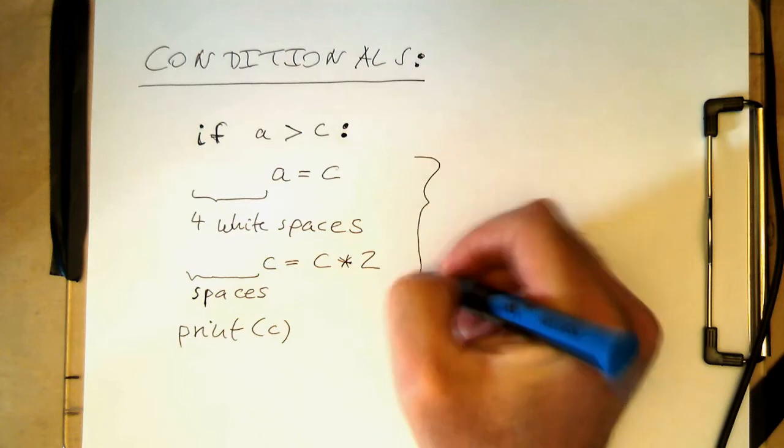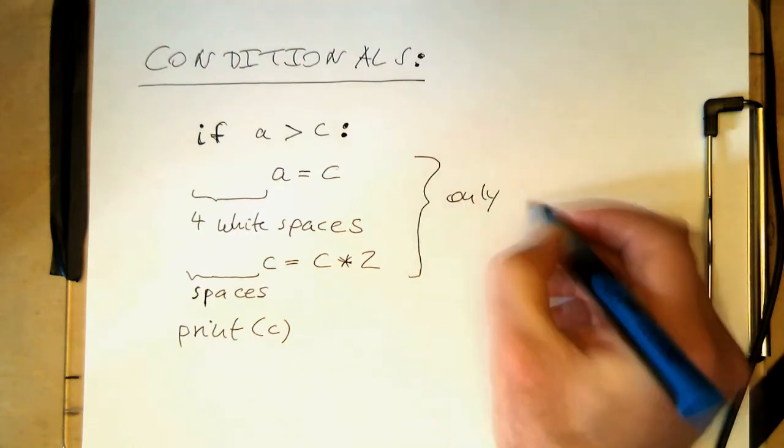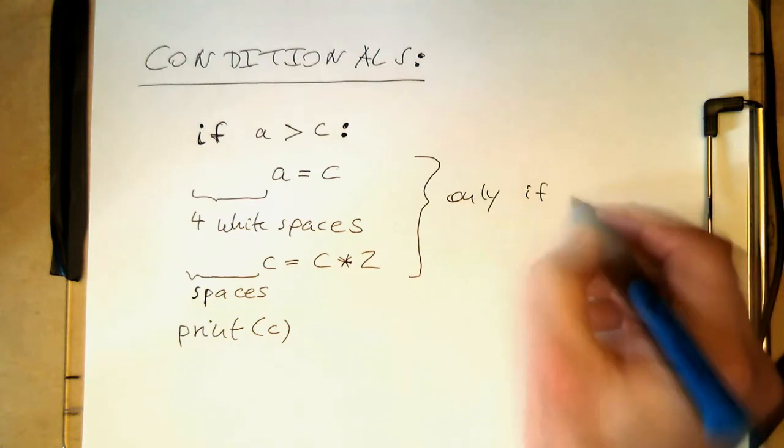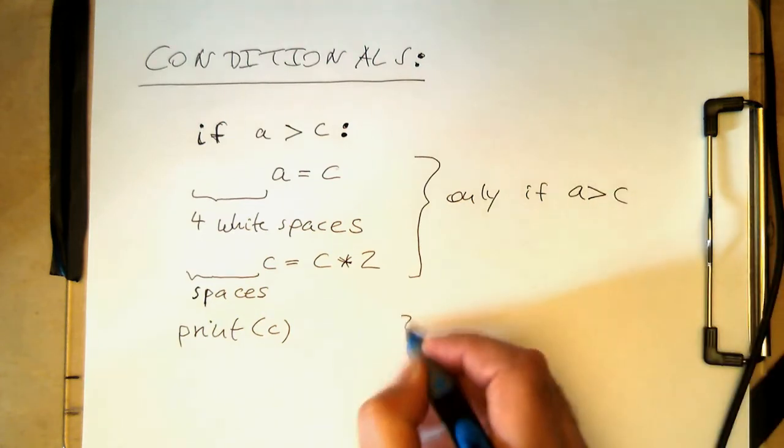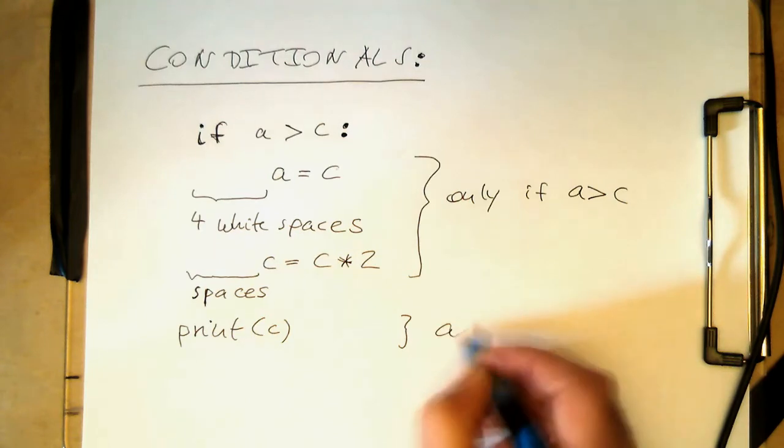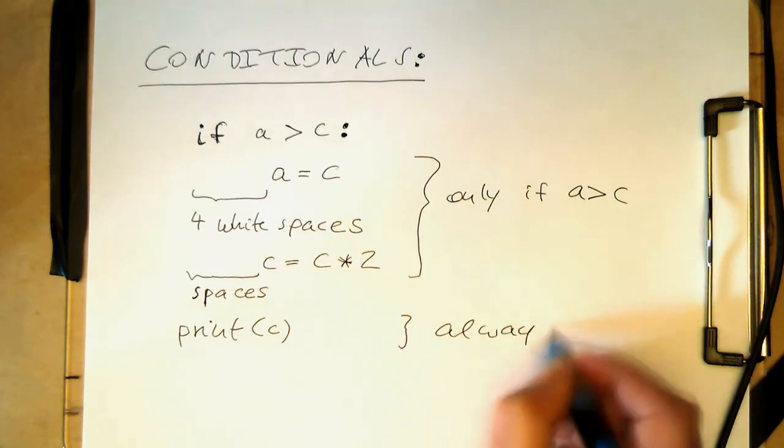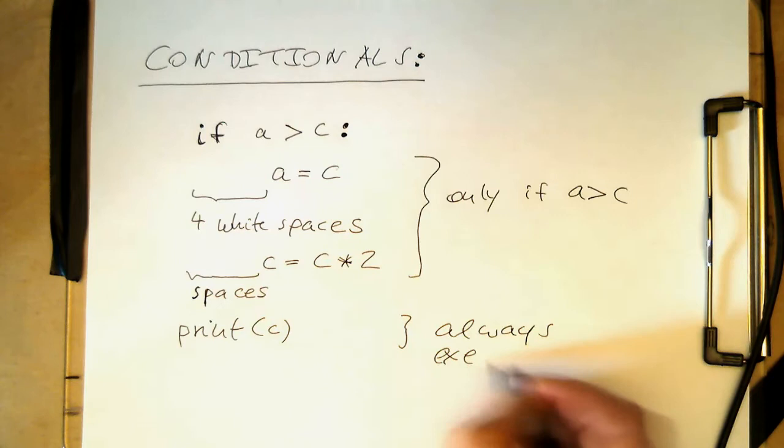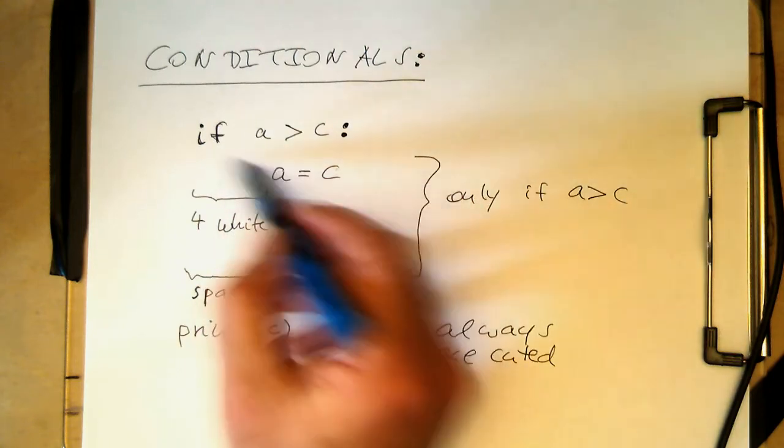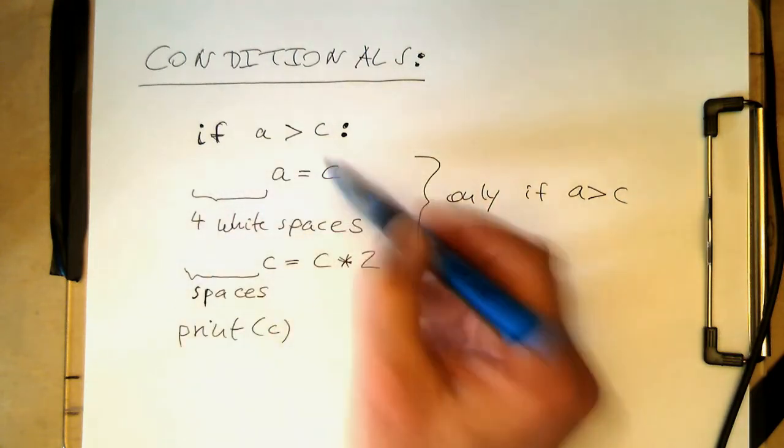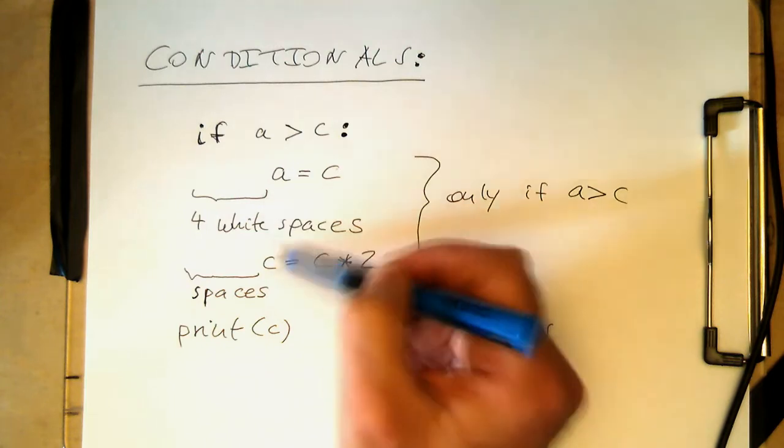This is only executed here only if a is greater than c, and this is here executed always. Just to recap here, these white spaces are important that you find the conditional execution.